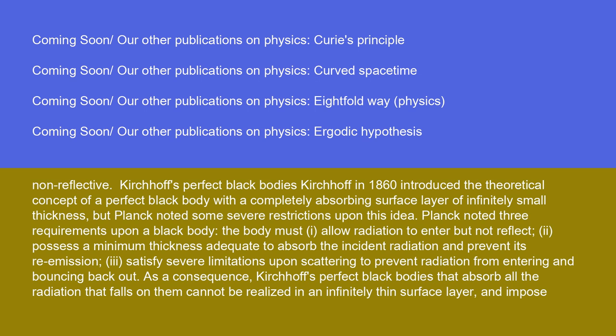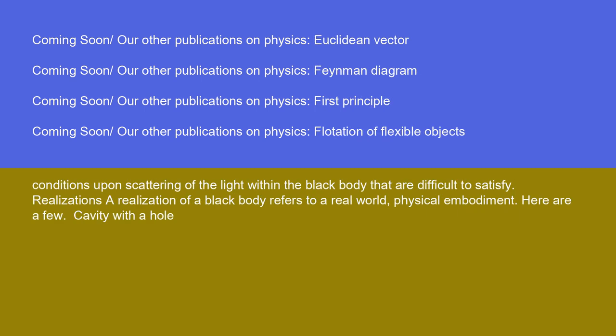Planck noted some severe restrictions upon this idea, specifying three requirements upon a black body. The body must: one, allow radiation to enter but not reflect; two, possess a minimum thickness adequate to absorb the incident radiation and prevent its re-emission; and three, satisfy severe limitations upon scattering to prevent radiation from entering and bouncing back out. As a consequence, Kirchhoff's perfect black bodies cannot be realized in an infinitely thin surface layer and impose conditions upon scattering of light within the black body that are difficult to satisfy.